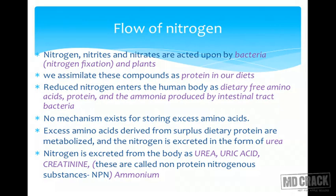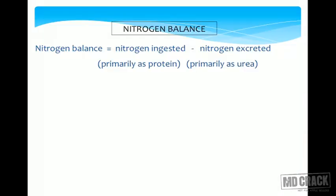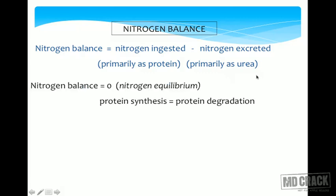It is important that nitrogen be balanced within the body. Nitrogen balance is defined as: nitrogen balance = nitrogen ingested minus nitrogen excreted. Nitrogen ingestion is mainly in the form of protein, and nitrogen excretion is mainly in the form of urea.